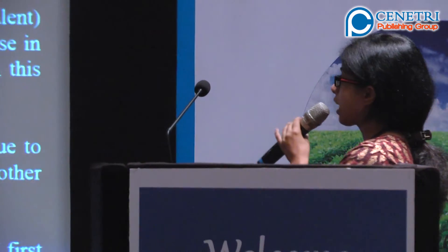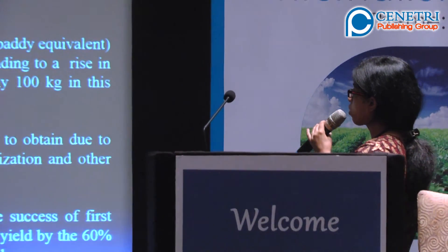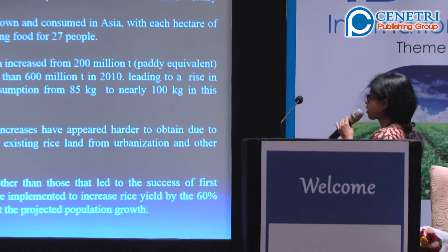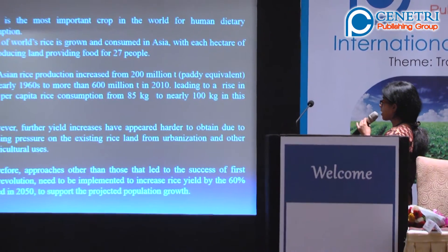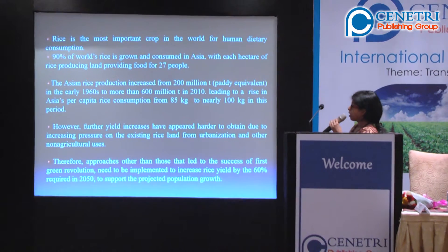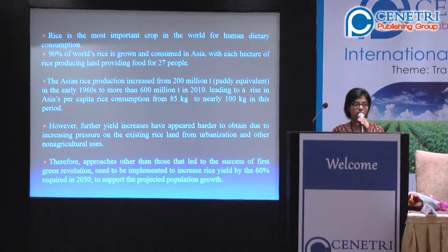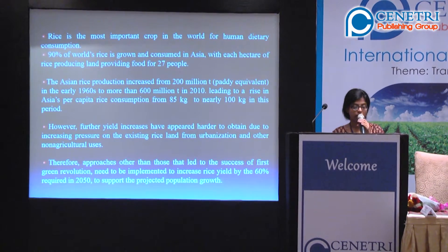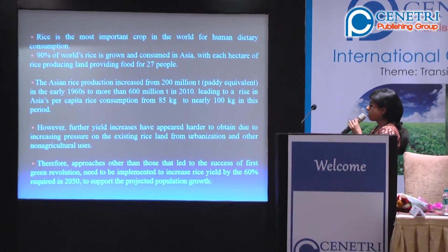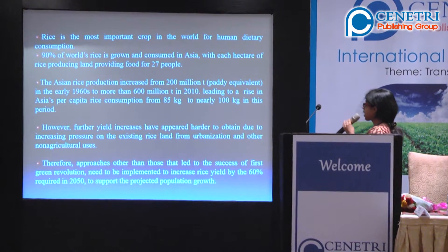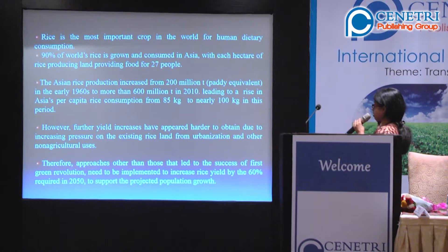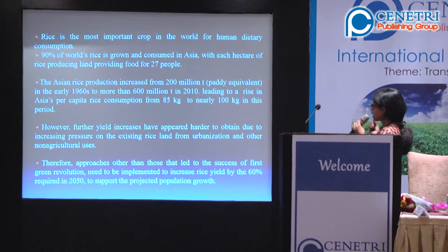Why rice? Rice is the most important crop in the world, and 90% of the world's rice is grown and consumed in Asia, with each hectare of rice-producing land providing food for around 27 people. The first green revolution, through the use of fertilizers, pesticides, and improved agricultural practices, led to an increase in paddy production from 200 million tons to 600 million tons.